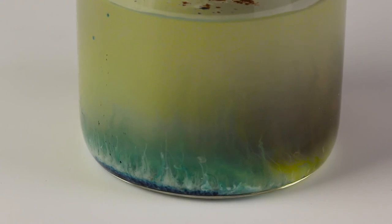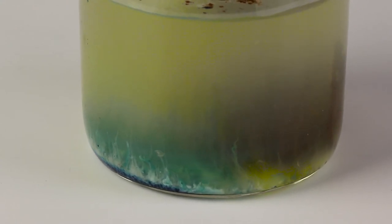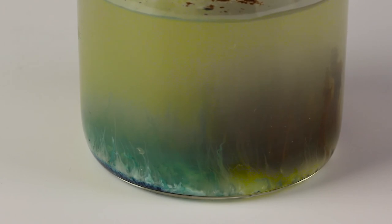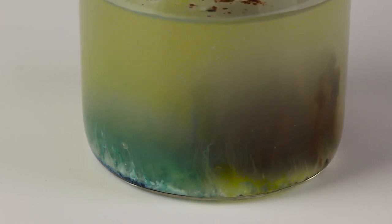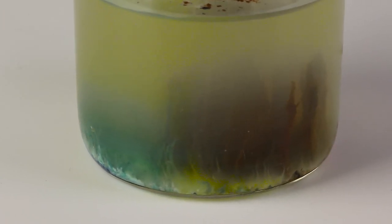Copper hexacyanoferrate is brown, while ferrous hexacyanoferrate is blue. Consequently, a color change can be observed during the experiment for these two salts.